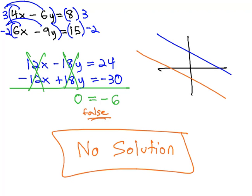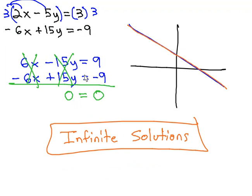So, if the variables subtract out completely and we have a false equation, it means we have parallel lines that never intersect. There's no solution to our equation. Versus if we have a true equation, such as 0 equals 0, it means we have the same line, and we have infinite solutions.